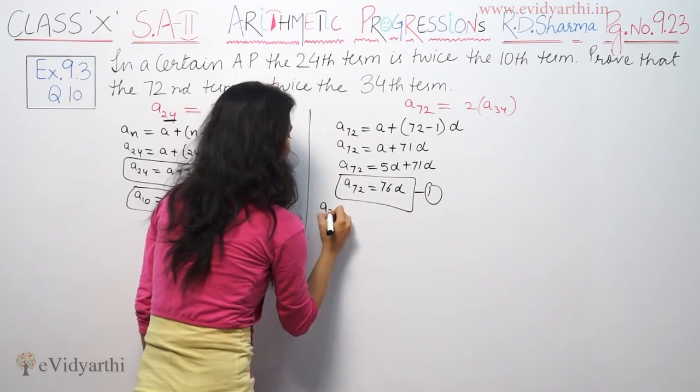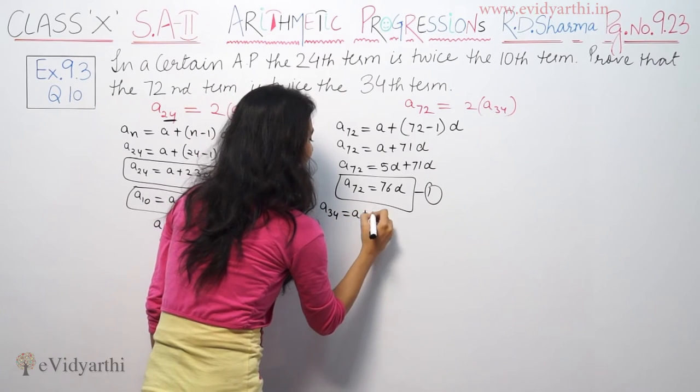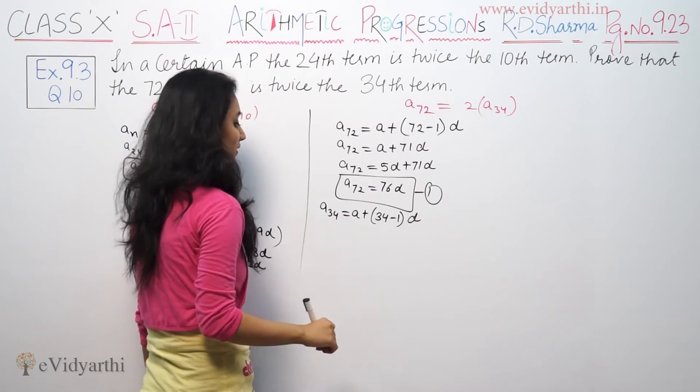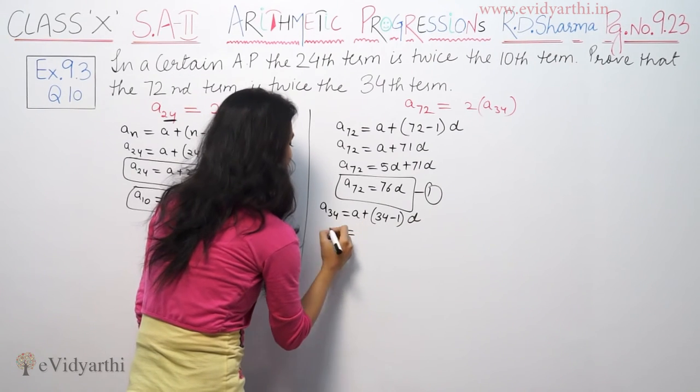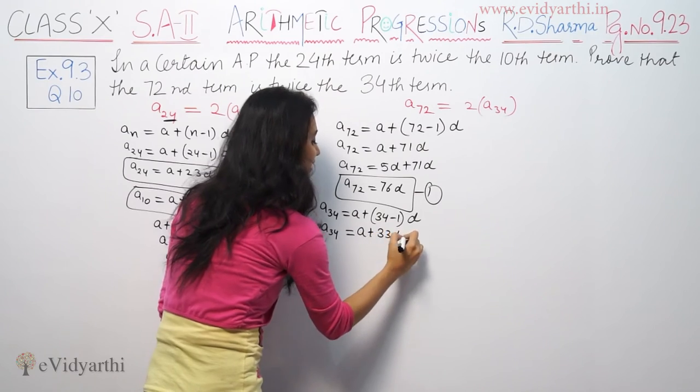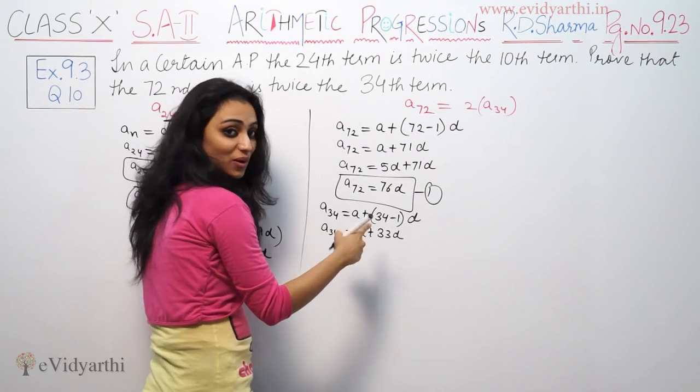So we will write the equation. A34 equal to A plus 34 minus 1D. A34 is equal to A plus 33D. A here is 5D.